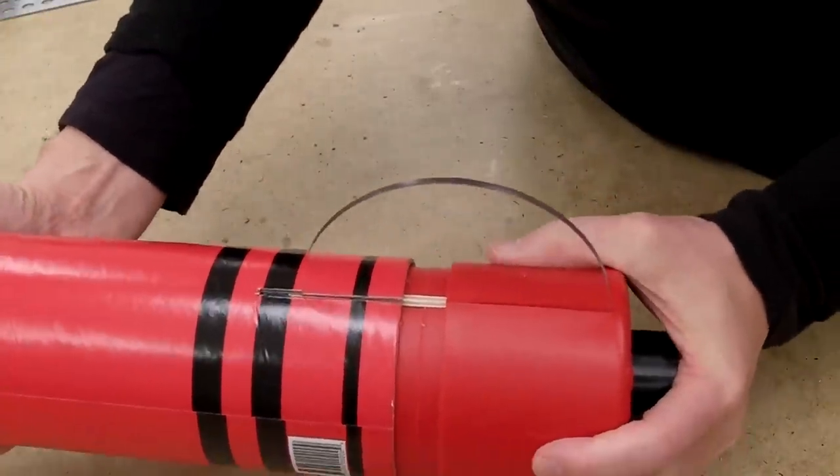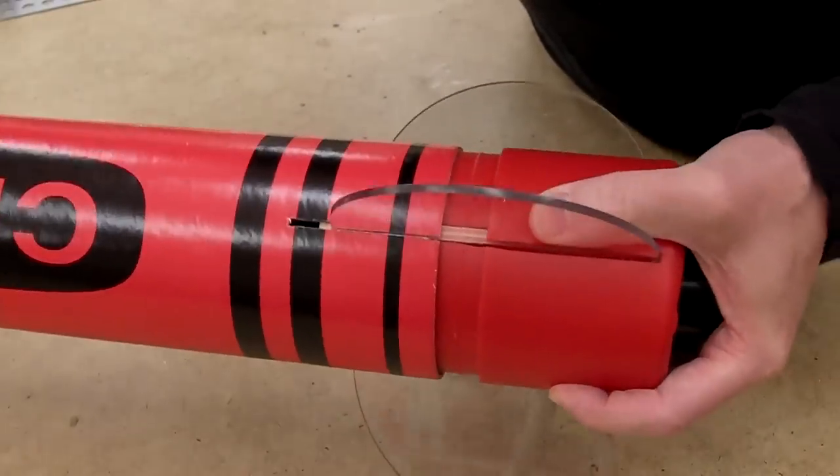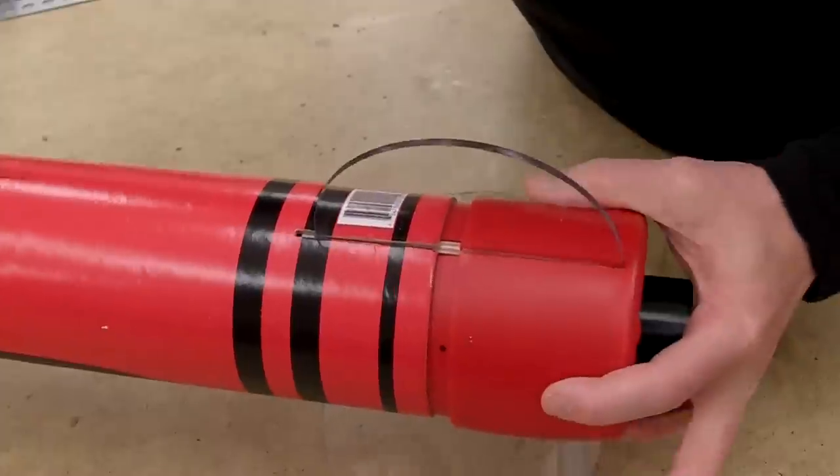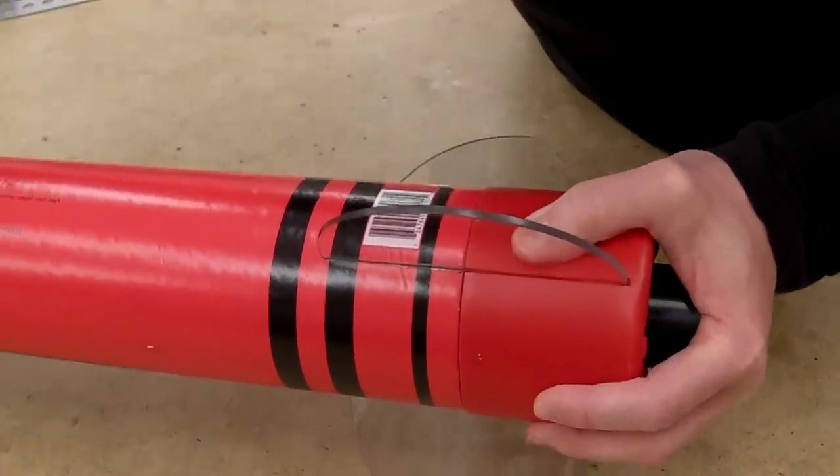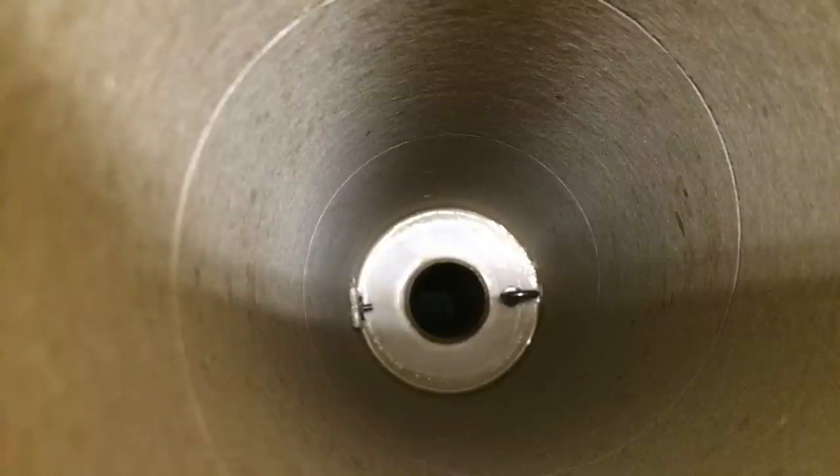Once the slots are cut, everything's ready for final assembly of the aft end. And the final step is a little epoxy to lock the fin can in place.